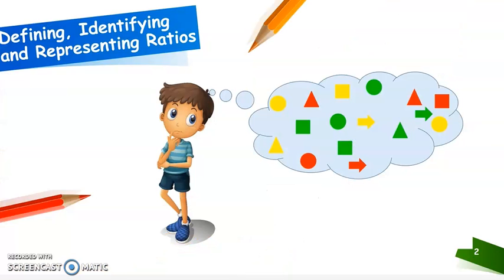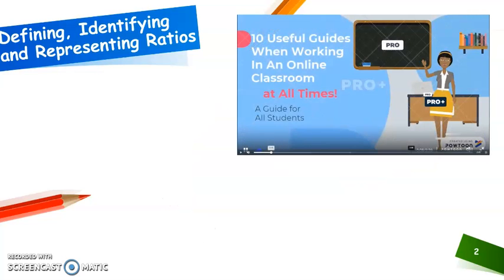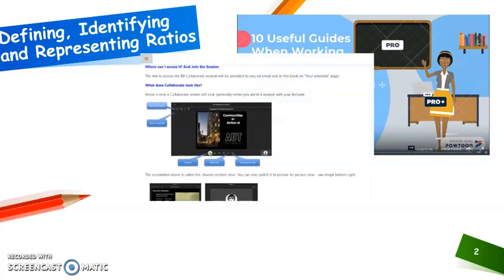The lessons that I am focusing on — defining, identifying and representing ratios — fall within the second of a three-term academic year. There are things that are mandatory in creating a comfortable and inviting working environment from the onset. It is for this reason that there are guidelines on etiquette and resources needed to be able to function efficiently on the platform.